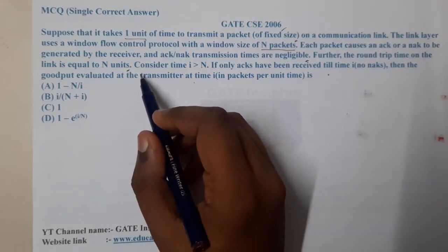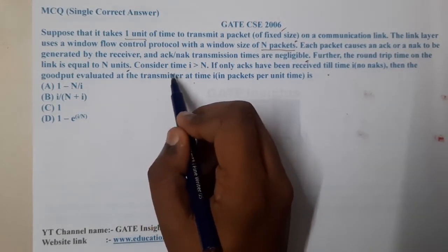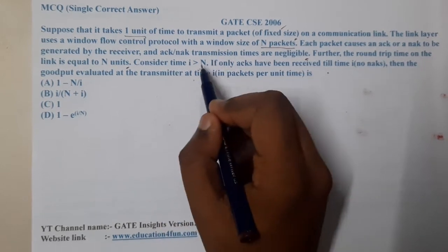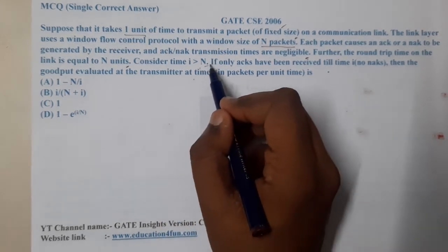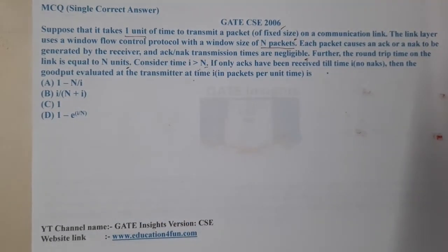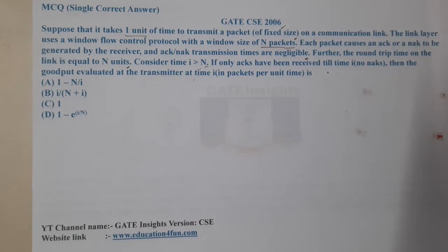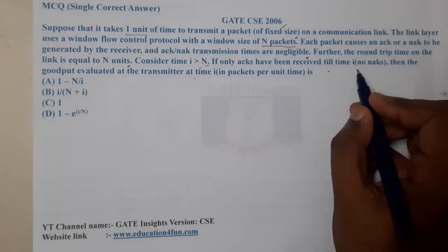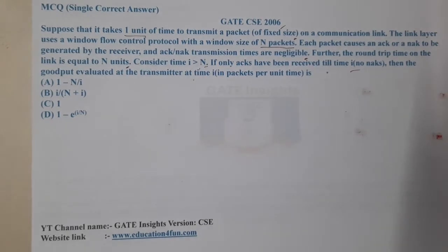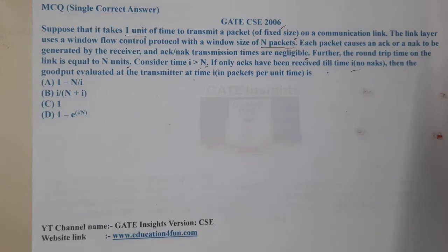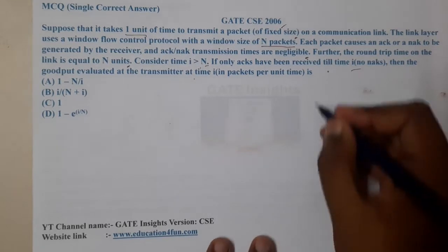Further, the round trip time on the link is equal to N units. Consider time i, where i is greater than N. If only acknowledgements have been received till time i (no NAKs), then the goodput evaluated at the transmitter — in packets per unit time — is what we need to find.